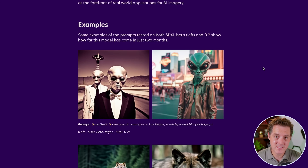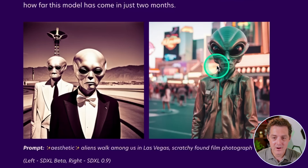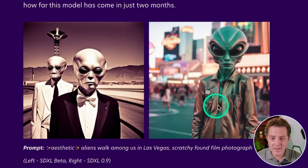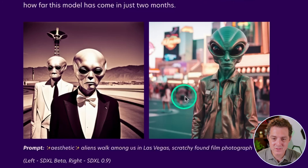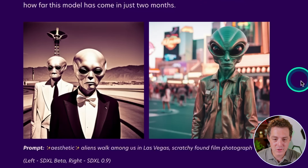Let's take a look at some examples comparing the previous beta to this new version. On the left we're seeing the beta, on the right the new version — these are the same exact prompts. The left is pretty good, but the right is so much more detailed, so much more color. There's bokeh in the background. It just looks so much better.